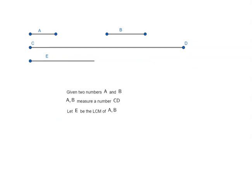Again, proof by contradiction. Let us say E does not measure CD. If it does not measure CD, then there must be some number which it will measure. Let that number be DF with remainder CF less than E.